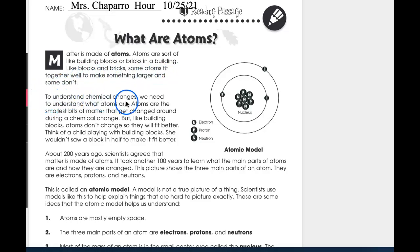To understand chemical changes, we need to understand what atoms are. Atoms are the smallest bits of matter that get changed around during a chemical change. But like building blocks, atoms don't change so they will fit better. Think of a child playing with building blocks. She wouldn't saw a block in half to make it fit better. About 200 years ago, scientists disagreed that matter is made of atoms. It took another 100 years to learn what the main parts of atoms are and how they are arranged. This picture shows the three main parts of an atom. They are electrons, protons, and neutrons.